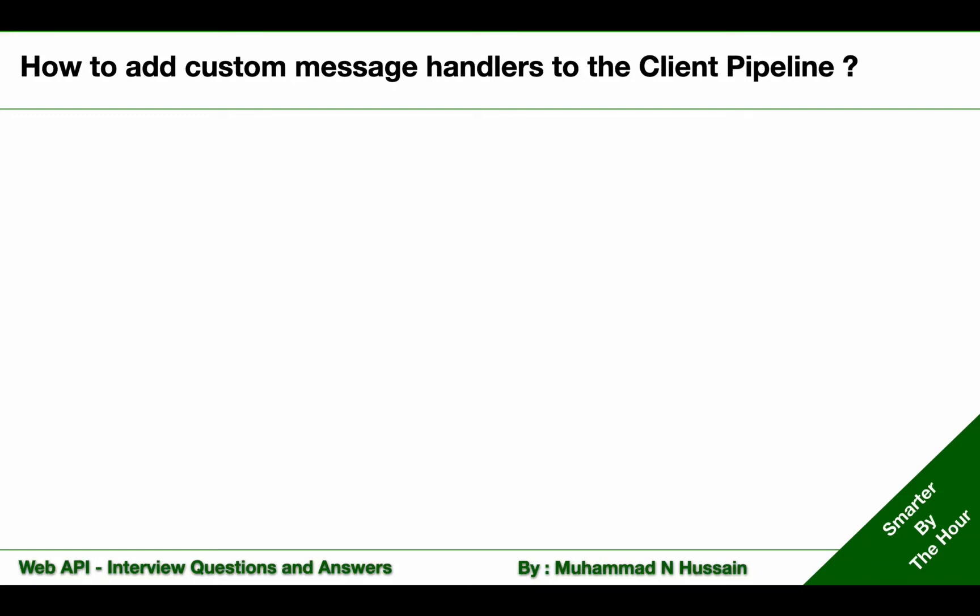How to add custom message handlers to the client pipeline. Some WebAPI clients require to log errors. Suppose that is our requirement and we want to achieve that goal by using a custom message handler. In this example, first I will show you how we can add a custom message handler for such logging purpose, and later I will show you how we can add that custom message handler to the client pipeline.